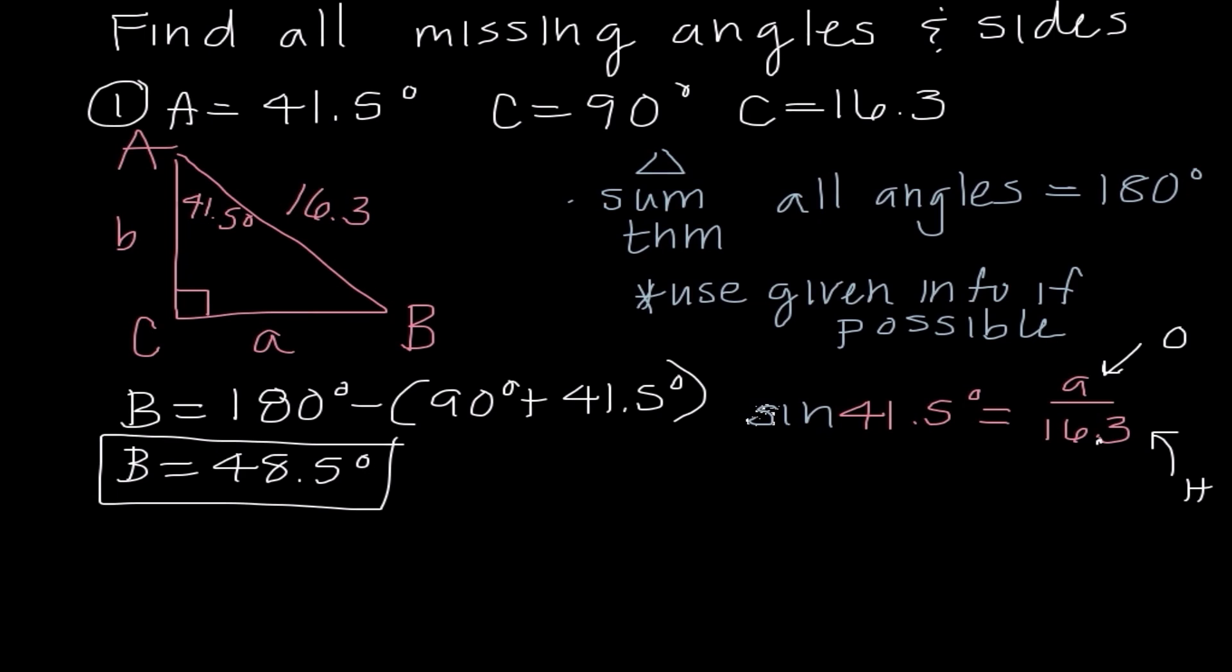I'm going to write sine of 41.5 degrees equals A over 16.3. This is not the only trig function we could use. We could have found the adjacent side first, or if I had used angle B, I'd be using the cosine ratio because it would be the adjacent over the hypotenuse. I need to isolate A, so I'm going to multiply both sides by 16.3. I get 16.3 times the sine of 41.5 degrees is equal to A. I'm going to put that into my calculator, make sure it's in degree mode, and then I get 10.8.